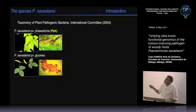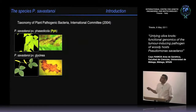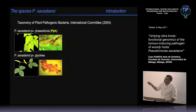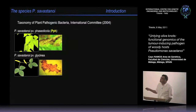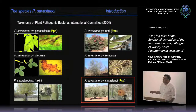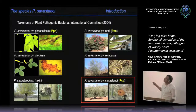Concerning the species Pseudomonas syringae, the International Committee of Plant Pathogenic Bacteria recognizes several pathovars. Two of them infect herbaceous plants—pathovar phaseolicola and pathovar glycinea, which infects soya beans—and the rest infect woody plants: fraxini, nerii, retacarpa, and savastanoi, our model system.